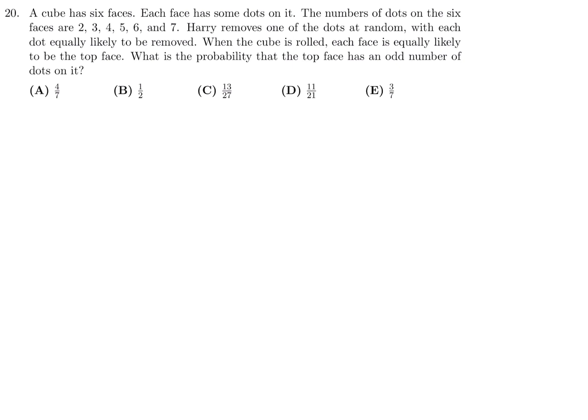A cube has 6 faces. Each face has some dots on it. The number of dots on the 6 faces are 2, 3, 4, 5, 6, 7. Harry removes one of the dots at random with each dot equally likely to be removed. When the cube is rolled, each face is equally likely to be the top face. What is the probability that the top face has an odd number of dots on it? Initially, the number of dots on the faces is 2, 3, 4, 5, 6, and 7. 6 faces, 6 numbers. Now, we have to remove a dot. So the probability of removing a dot from this face would be 2 over the total number of dots. If you add these numbers up, it's 27.